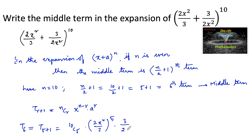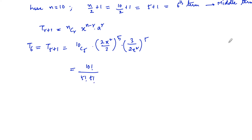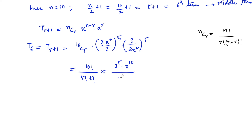Multiplying by (3 / 2x²)^5. On simplifying, this is 10C5 = 10! / (5! · 5!), since nCr = n! / (r! · (n−r)!). Expanding gives 2^5 · x^10 / 3^5 multiplied by 3^5 / (2^5 · x^10).